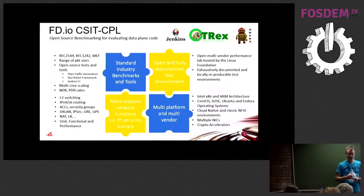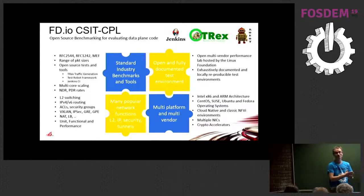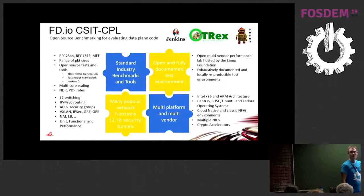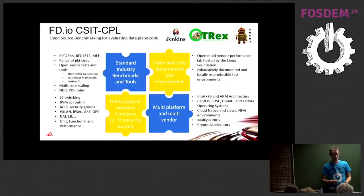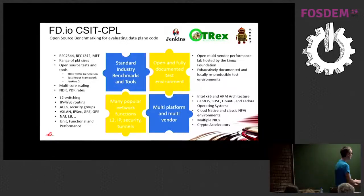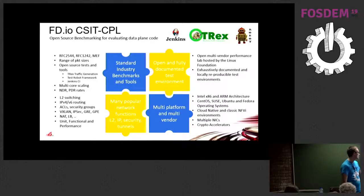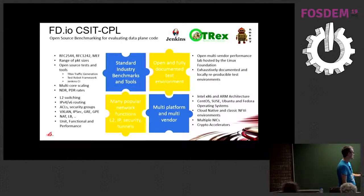We test multi-core scaling — with a single core, two cores, and four cores, sometimes even more. We test NDR (non-drop rate), PDR (partial drop rate, with a 0.5% packet drop tolerance), and MRR (maximum receive rate, where you throw the kitchen sink and see how much gets through). We test the full range of network functions: L2 switching, IPv4, IPv6 routing, ACL security groups, overlays, and we have a slew of functional and performance test cases.